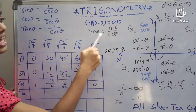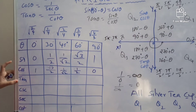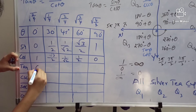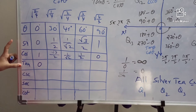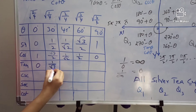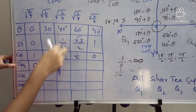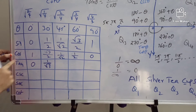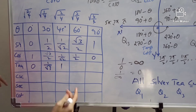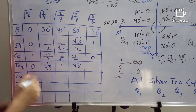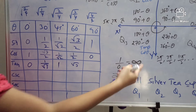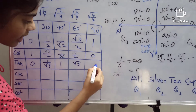Tan θ = sin θ/cos θ. Tan 0° = sin 0°/cos 0° = 0/1 = 0. Tan 30° = sin 30°/cos 30° = (1/2)/(root(3)/2); the 2s cancel, giving 1/root(3). Tan 45° = sin 45°/cos 45°; both cancel, giving 1. Tan 60° = root(3)/2 ÷ 1/2; the 2s cancel, giving root(3). Tan 90° = sin 90°/cos 90° = 1/0 = infinity.